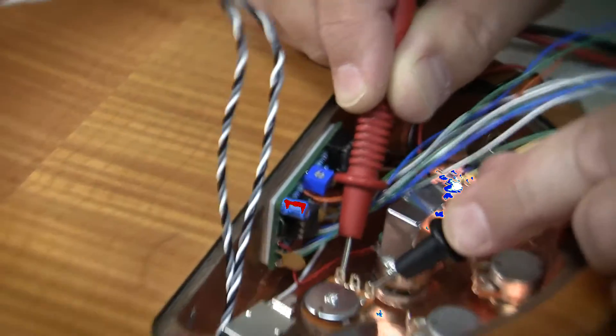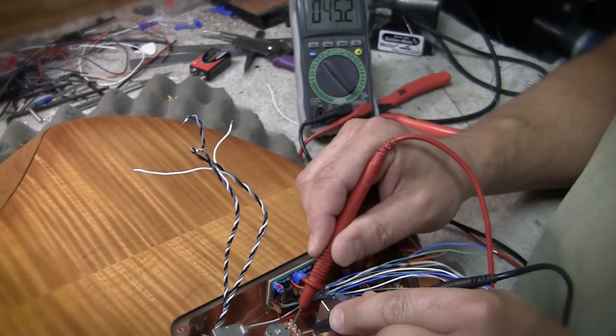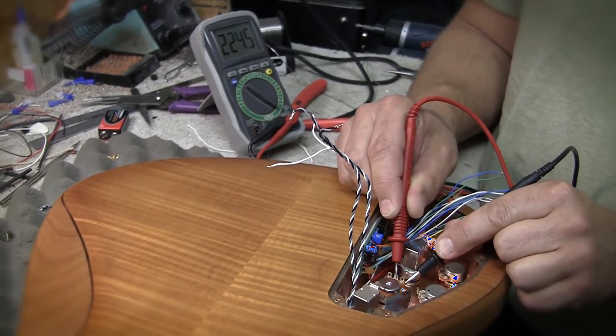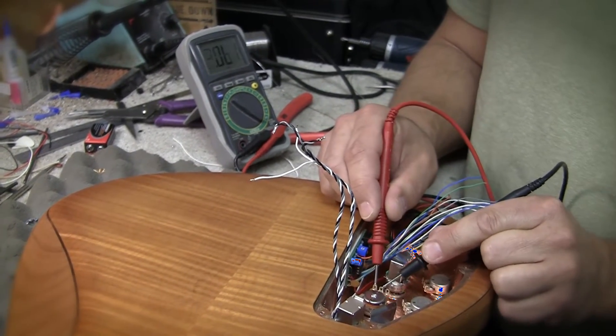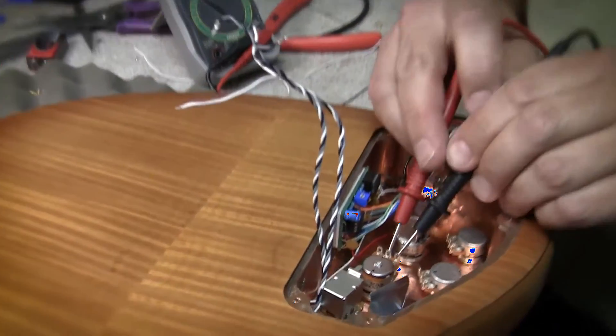And then these two lugs are going to be 175-ish or 220 something. So again, here is my center. Now watch what happens when I turn the pot.